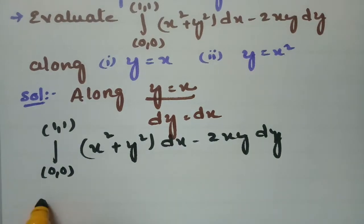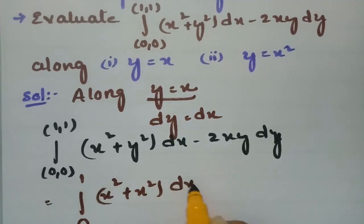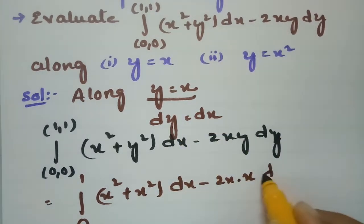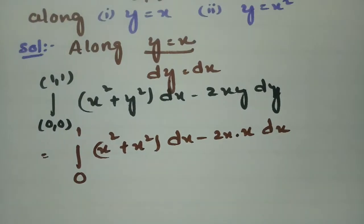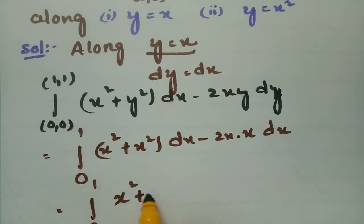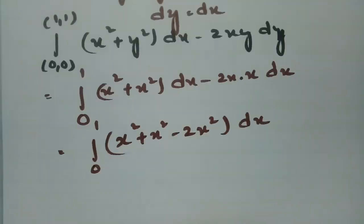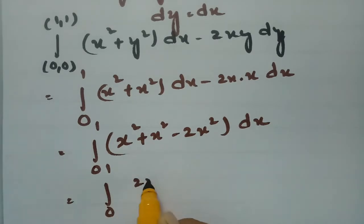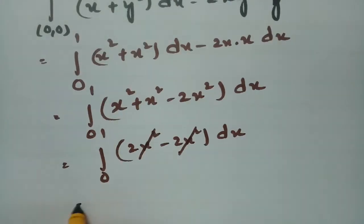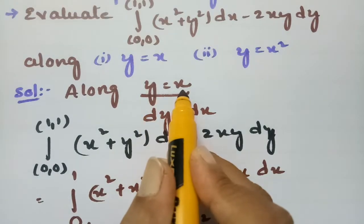So this is equal to integral from 0 to 1 of (x² + x²)dx minus 2x·x dx. I changed this in terms of x, so this will be integral 0 to 1 of (x² + x²) minus 2x² into dx, which is 2x² minus 2x² = 0. So this is integral of 0 dx, and the answer is 0 along the curve y = x.